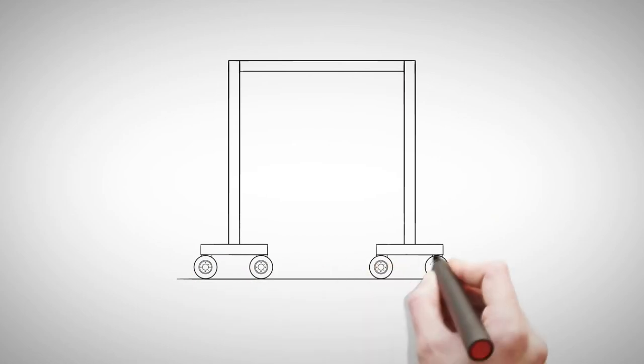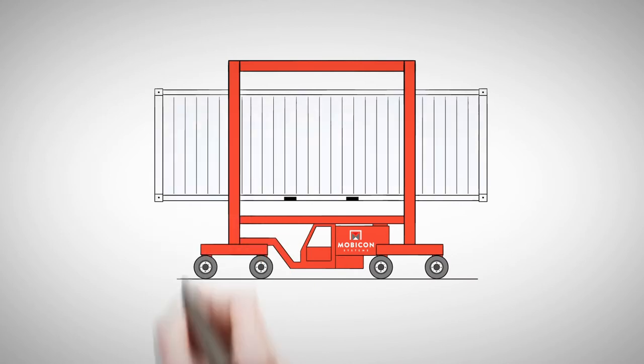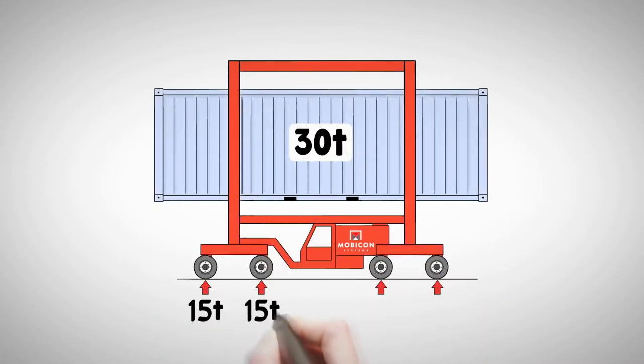All Mobicons are very light, have four axles and the load is evenly spread out over the four axles. A Mobicon loaded with a 30 tonne (67,000 pounds) container has an axle weight of only 15 tonne (33,000 pounds).